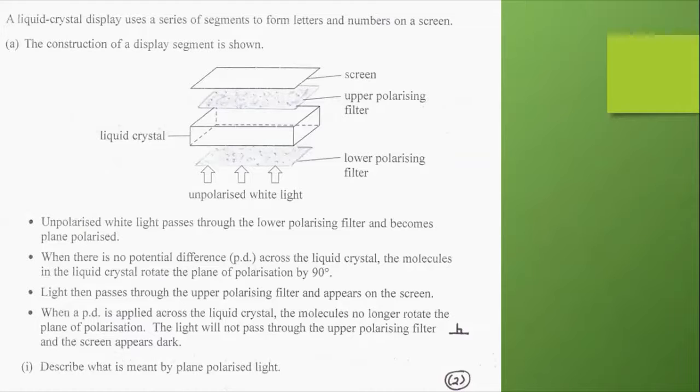Bullet points - this could be an important exam question for you. Unpolarized white light passes through the lower polarizing filter and becomes plane polarized. When there's no potential difference across the liquid crystal, the molecules in the liquid crystal will rotate the plane of polarization by 90 degrees. The light then passes through the upper polarizing filter and appears on the screen. When a PD is applied across the liquid crystal, the molecules no longer rotate the plane of polarization. The light will not pass through the upper polarizing filter and the screen appears dark. An interesting effect.